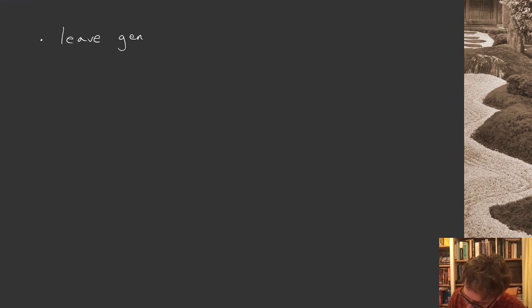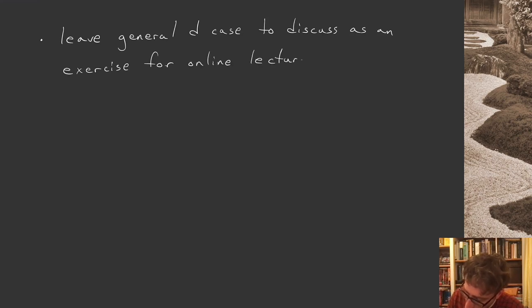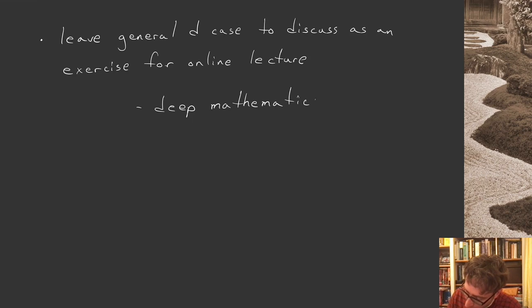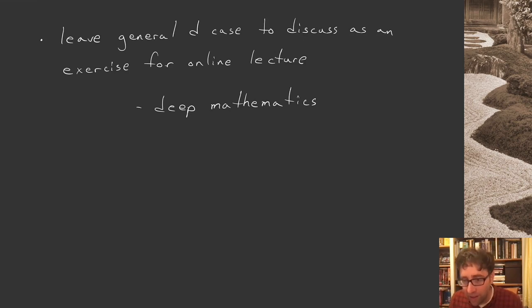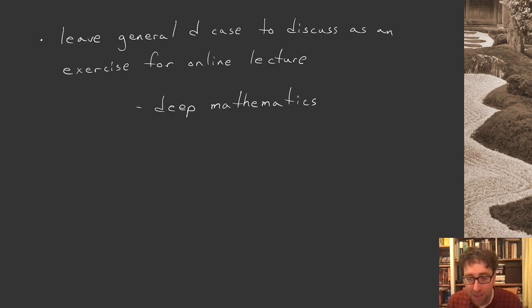I'll leave the general d-dimensional case as an exercise and for you to ponder. There's some very interesting deep mathematics here, having to do with the structure of the octonions, quaternions, and various number fields, and also the notion of Bott periodicity, which we won't touch on in this module since we're more physics-oriented. Next week we still have more to cover on spinors: I need to introduce the notion of a spinor inner product and the Fierz identities before we get to the main topic of the supersymmetry algebra itself.